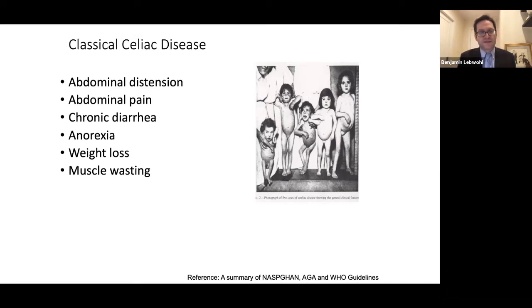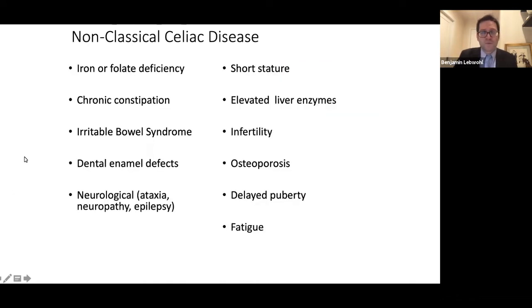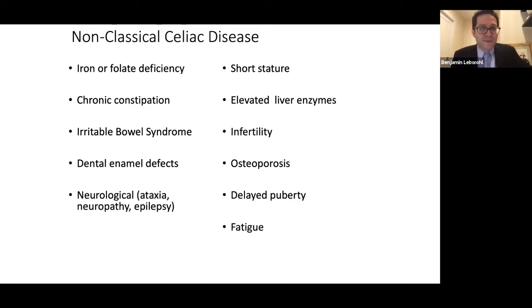As a result, they would have abdominal distension or swollen abdomens and diarrhea. They wouldn't be eating; they'd be losing weight and wasting away. Thankfully, this is not the picture of celiac disease today. We still make the diagnosis in young children and still see people who have diarrhea as their predominant symptom, but there are so many other ways that people present. We call that non-classical celiac disease, because it's not like the way the old textbooks describe.